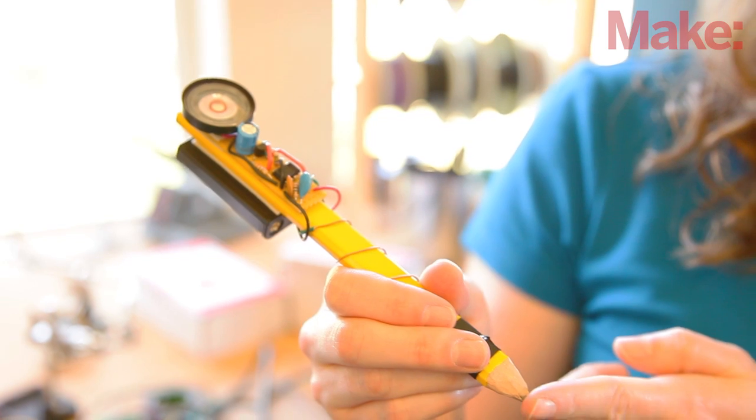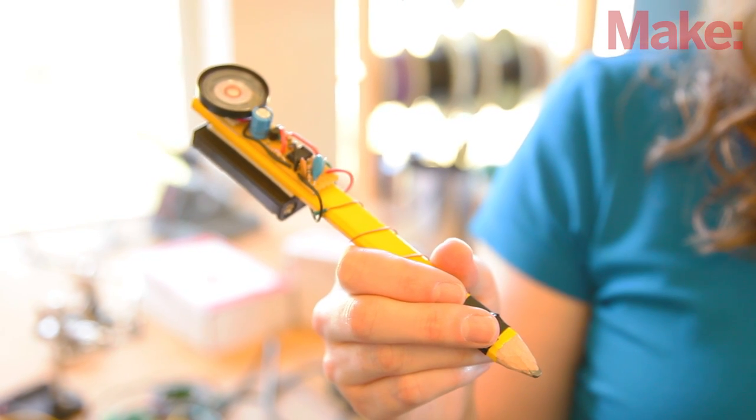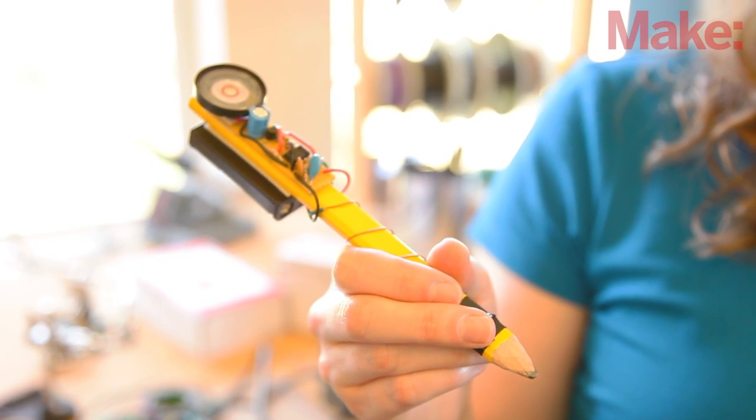Hi, I'm Laura at Make. Drawdio is a simple electronic sound synthesizer built on a pencil. Originally designed by Jay Silver, the Drawdio circuit plays a musical tone with a frequency that varies based on the resistance between two points.